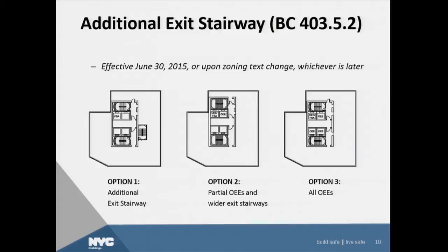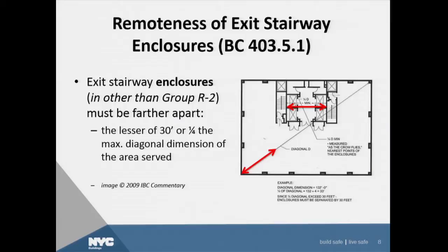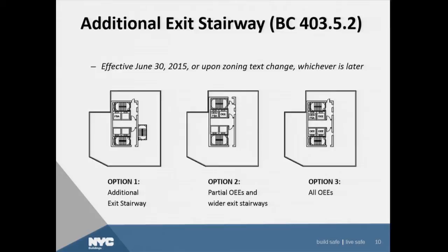Option one has the additional exit stairway. The third stairway, when used, does not have to comply with the previous stair separation requirement — that only applies to two of the stairways. Option two includes wider stairways and evacuation elevators for tenants. Option three uses all evacuation elevators without a third stair. So you have three choices for a super high-rise building. As stated at the beginning, this does not take effect until June 30th, 2015, or until there's a zoning text change, because there will be some zoning credits given for this.